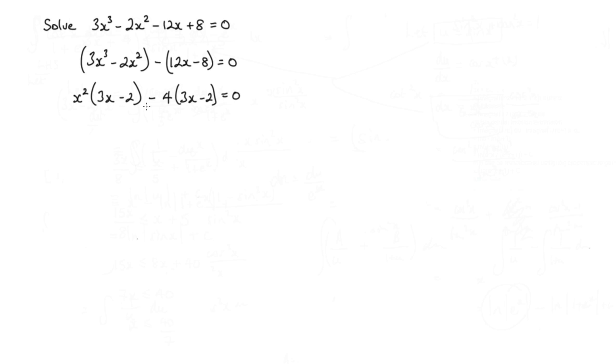Now, the 3x minus 2, that's the common factor. So let me just factor out the following. I'll have 3x minus 2, and that's going to be multiplied by x squared minus 4. That's still equal to 0.